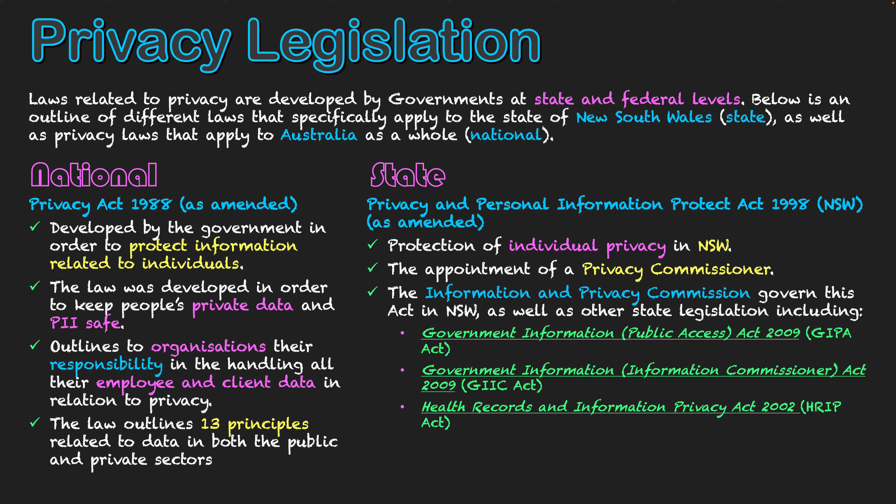They govern this specific act, but they've also got other acts as well that they use together in order to administer this law. These acts include the Government Information Public Access Act 2009, the Government Information Independent Commissioner Act 2009, and the Health Records and Information Privacy Act 2002. The Information Privacy Commission uses these acts as the basis of their enforcement of privacy for businesses who store data about people.